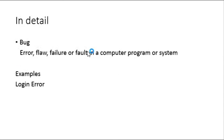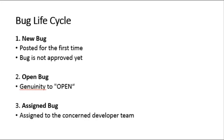First, let us see about bugs. A bug is nothing but an error or failure which causes the complete application or system to behave abnormally. This is mainly due to human errors while writing source code or during the design itself. One such example is a login error — even though you are giving correct credentials, you may not be able to login due to a defect or bug.